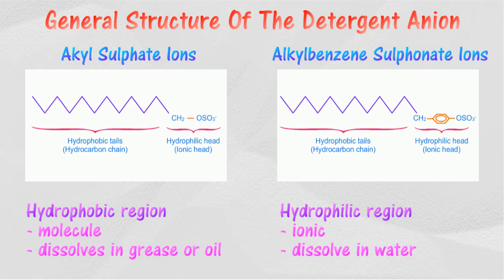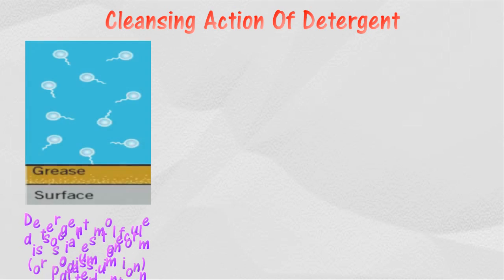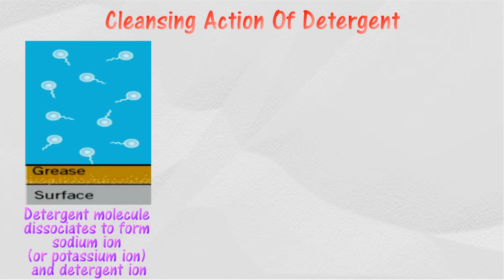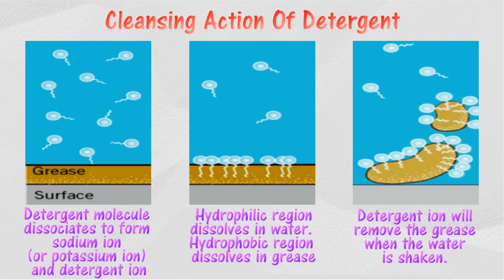The ionic head, also called hydrophilic, can dissolve in water. Detergent ionizes in water to form detergent ions and sodium ions. The tail region, or hydrophobic tail, is soluble in grease but not in water. The head region, or hydrophilic head, is soluble in water but not in grease.